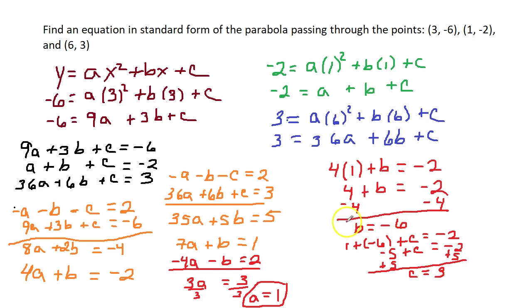So, now that we know a, b, and c, we can plug them in here. y equals, in place of a, I put 1x squared plus bx. b is negative 6, so minus 6x plus c, which is 3. You don't have to write that as 1x squared. It could just be x squared. So, I could just rewrite this to clean it up as y equals x squared minus 6x plus 3.